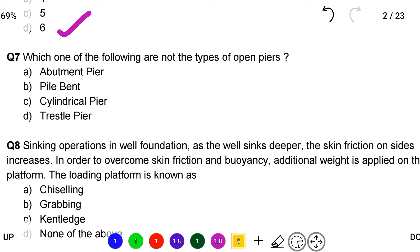Next question: which one of the following are not the types of open piers? Option A abutment pier, option B pile bent, option C cylindrical pier, option D trestle pier. So the correct answer is option A abutment pier.